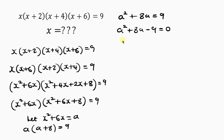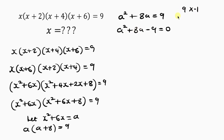We need to factorize a²+8a−9. Ask yourself what factors of 9 work. We have 9 times 1, but to get negative 9 we make one of them negative: 9 times −1 gives −9, and 9 plus (−1) gives positive 8, which matches the middle term. So these are our factors.